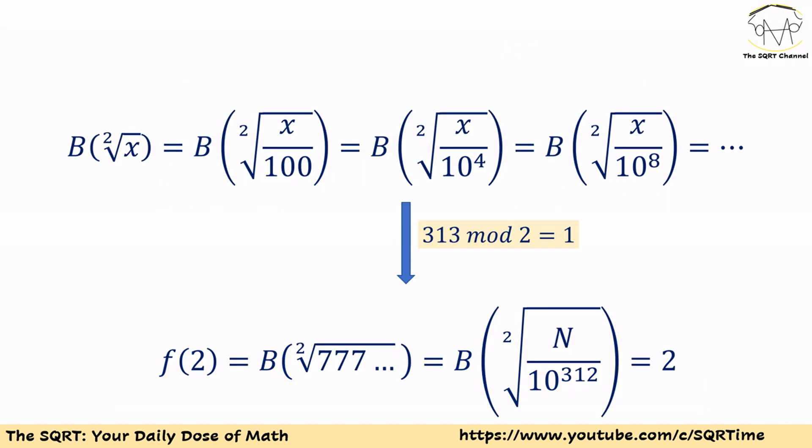For a value like x, the leading digit of sqrt(x) is going to equal the leading digit of sqrt(x/100). If x is large enough, instead of using 100 we can use 10^4 or 10^8. The leading digit for a large x is going to be the same as long as 10^8 is small enough compared to x.